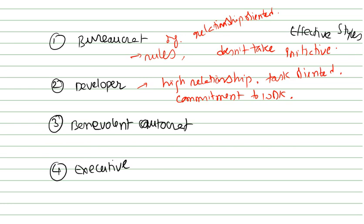The third one, benevolent autocrat: he is a directive manager who knows what he wants and often gets it without creating any trouble. He is less oriented and adopts positive economic motivation in getting things done, and follows a paternalistic approach in managing the organization.